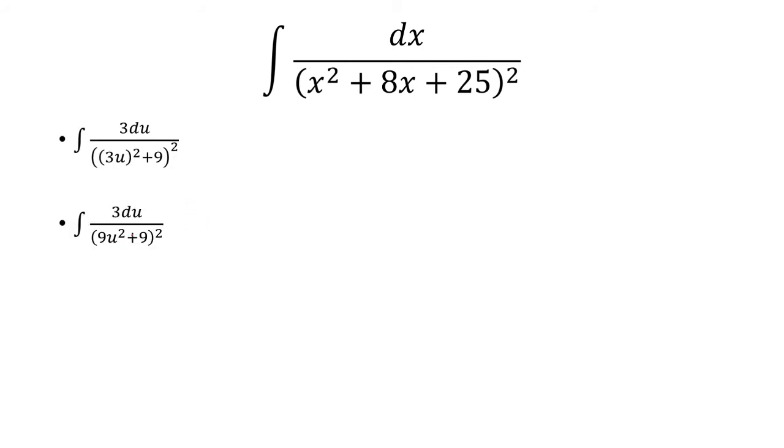3u squared is just 9u squared. And then I'm going to factor out the 9. So here, just think of it as 9 times quantity u squared plus 1. And then squaring everything. So 9 is going to get squared and it's going to come outside. And we'll just have u squared plus 1 squared inside.